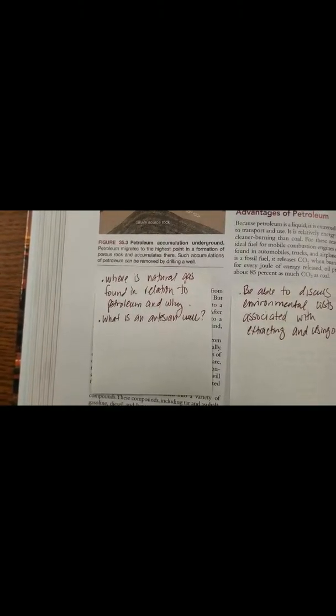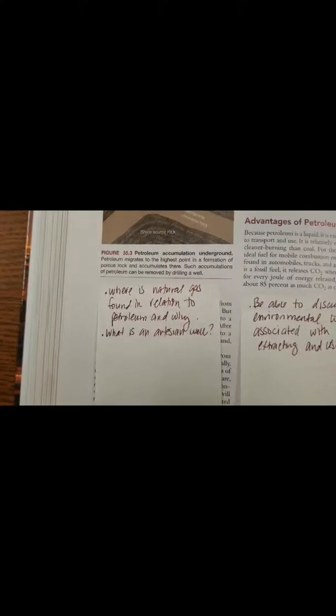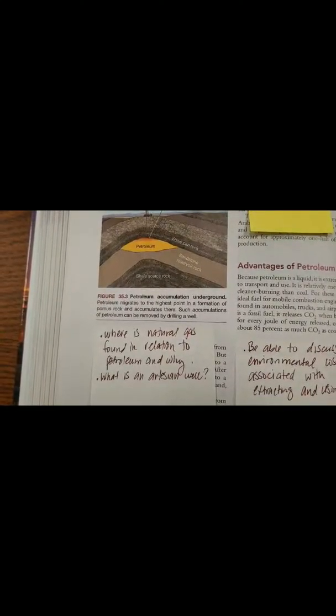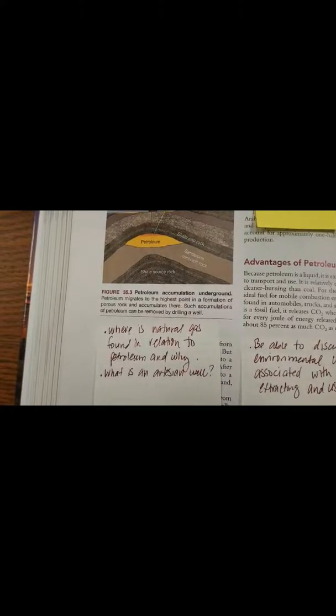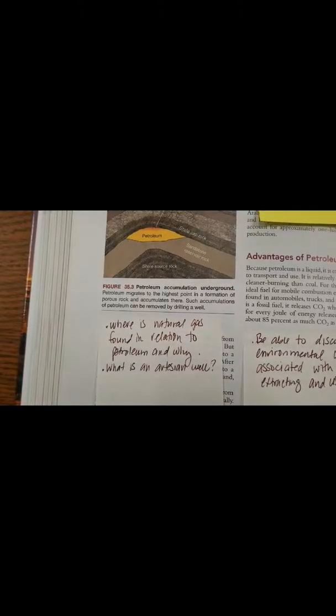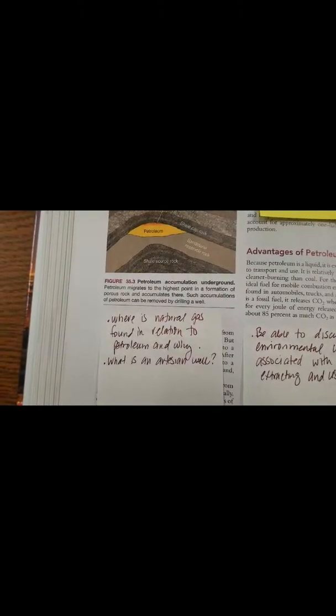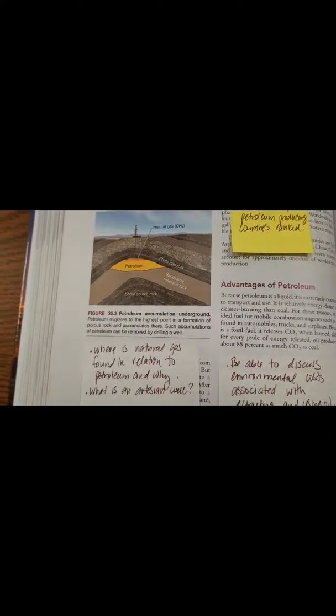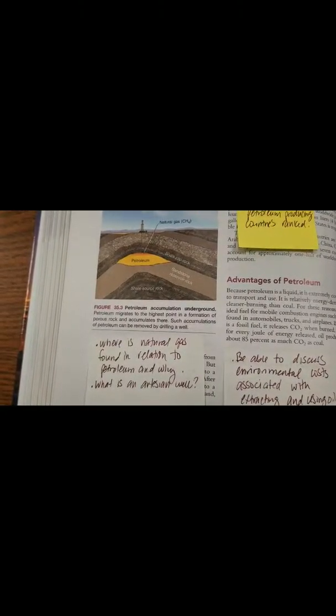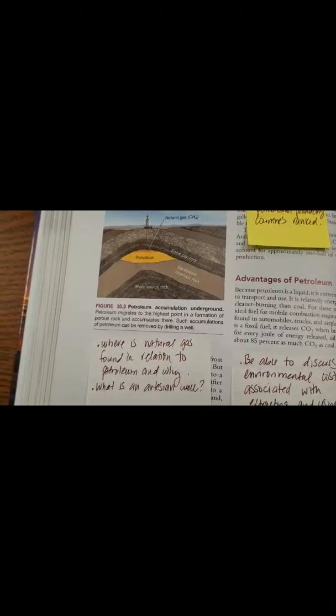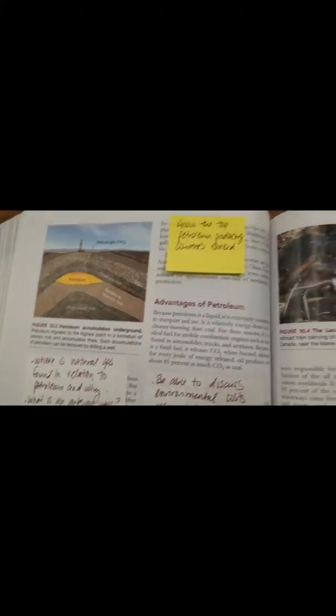I also bring up again, what is an artesian well? That was from a previous chapter. That kind of has to do with this petroleum and natural gas locked underneath the shale caprock. An artesian well was when we had water that was locked and trapped underneath the shale caprock. Both are under pressure. That's why often when we strike oil, you'll see in the movies that it kind of sprays out, because it's under pressure. When we tap into that, it releases that pressure and it comes out. That's the same with the artesian well with water.